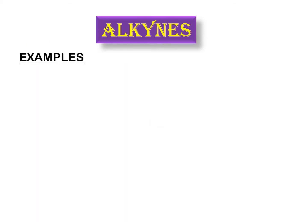Let's start with a very simple example. This molecule has a carbon-carbon triple bond and one, two, three, four carbon atoms in the only possible chain, so it belongs to the alkyne class. It does not have any substituents attached to the chain, so it's a simple alkyne.